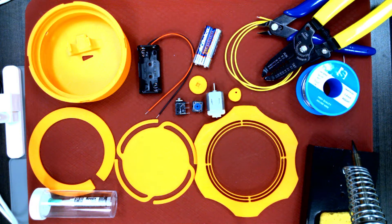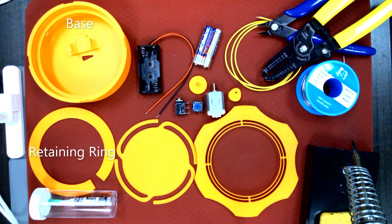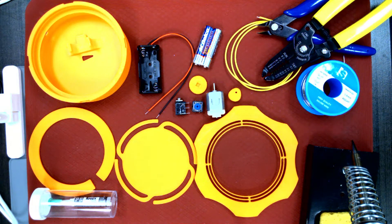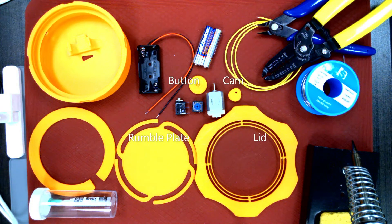First, we must prepare our workspace and get our supplies together. For the dice roller parts, you'll need the 3D printed base, retaining ring, rumble plate, lid, cam, and button.